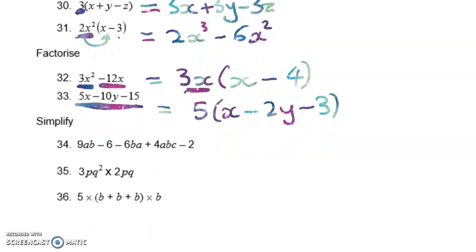Now, we've just got a few questions left. I'll see if I can get through in 15 minutes. This is another example, number 34, of like terms. The thing to notice here is that the order in which we multiply doesn't matter. So 9ab and -6ba are like terms. I've got -6 here and -2 here, so they also are like terms. So cleaning all of that up gives me 3ab + 4abc - 8.